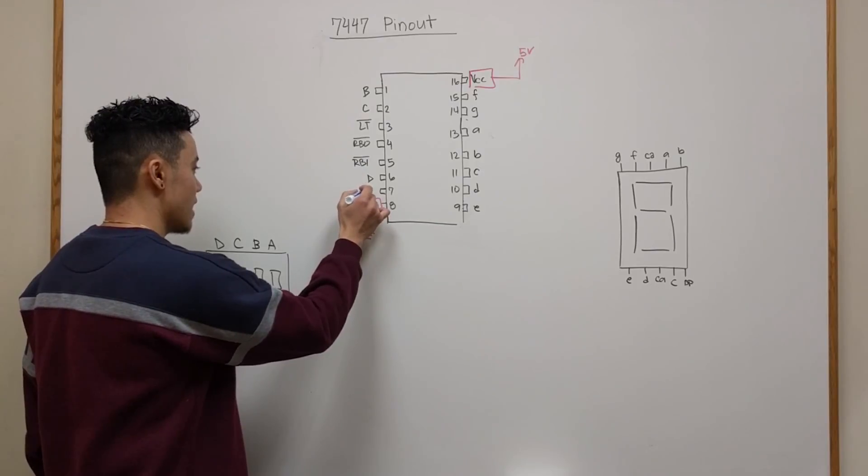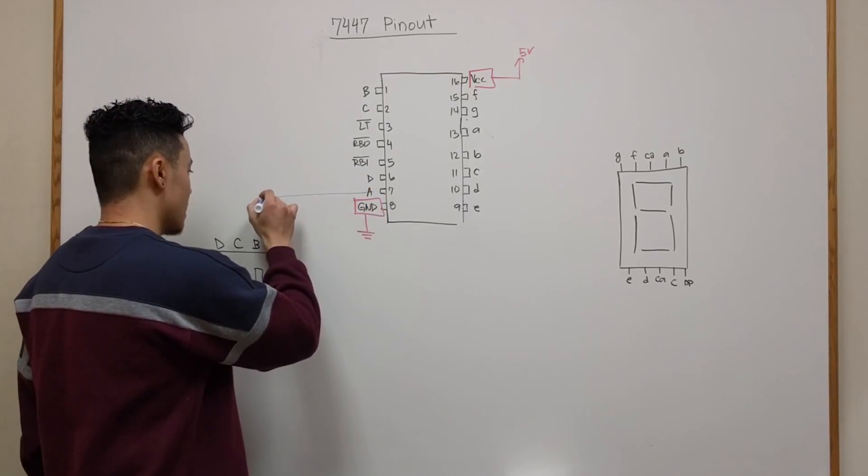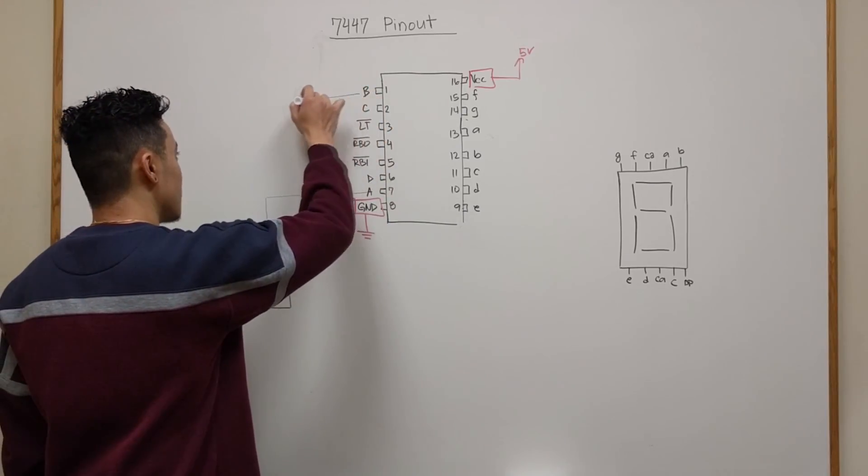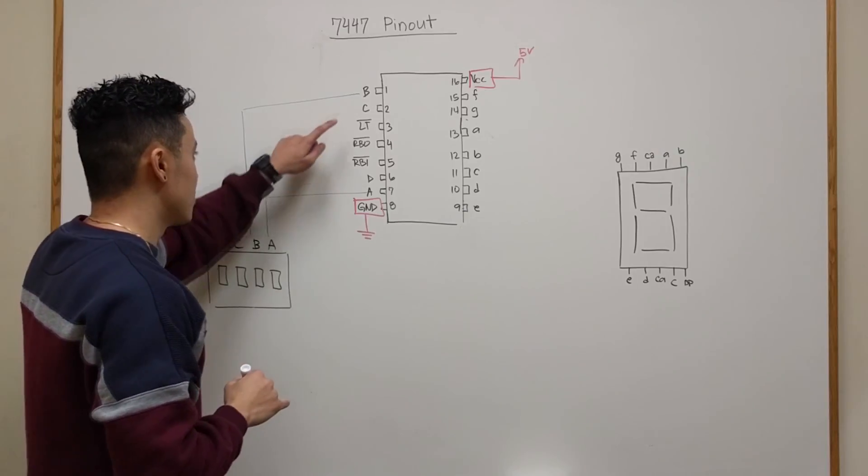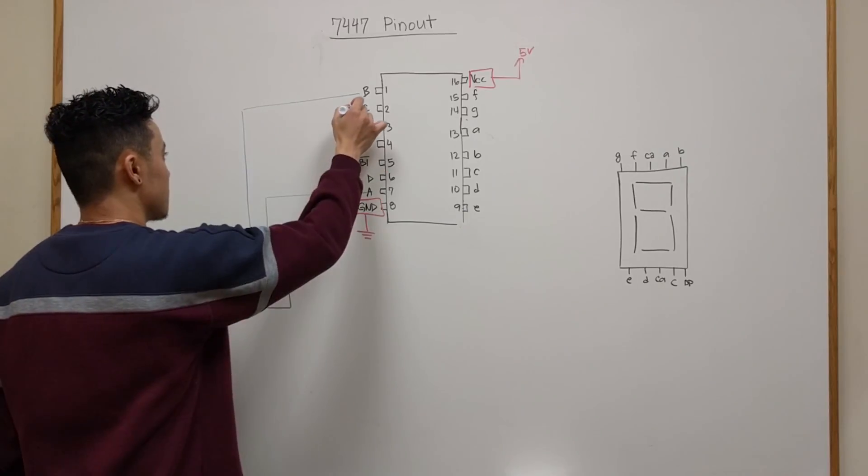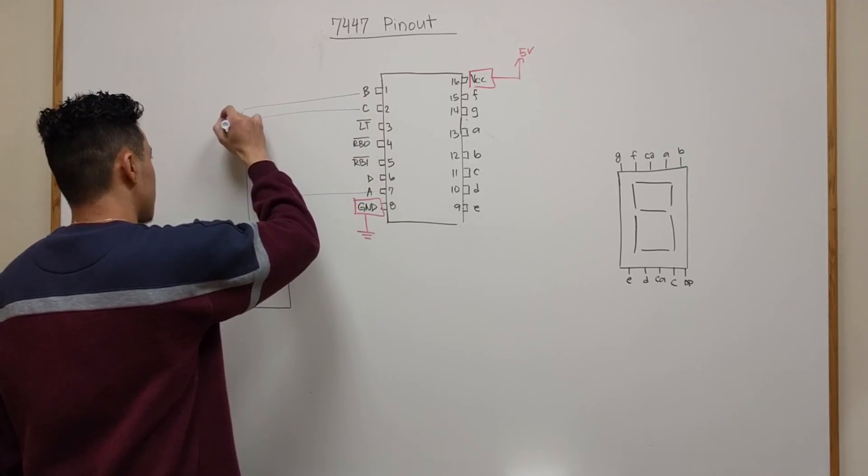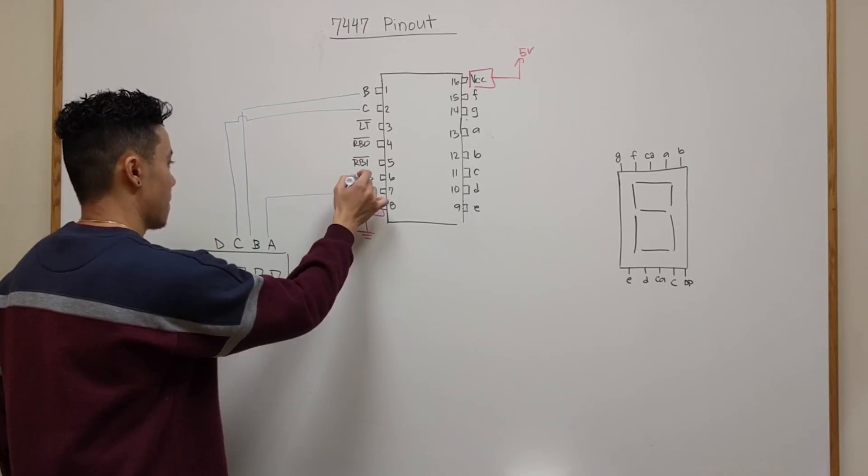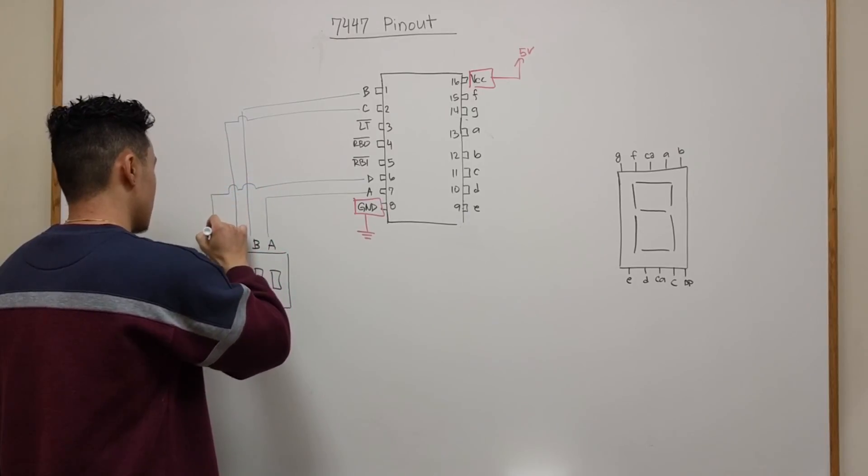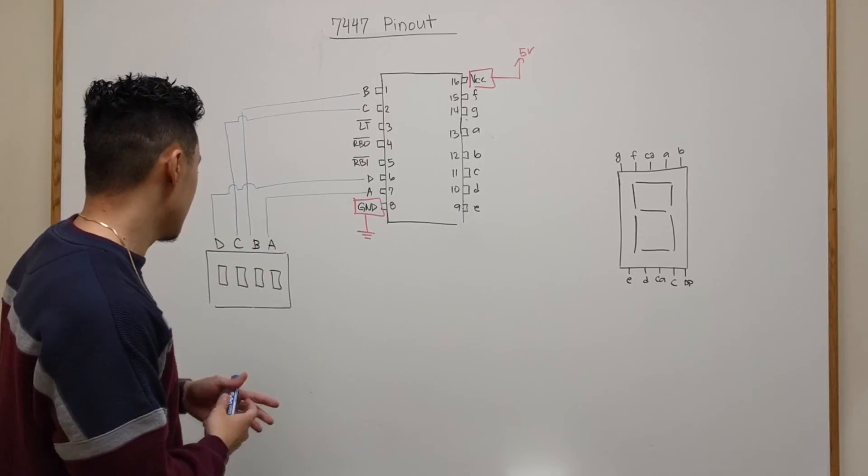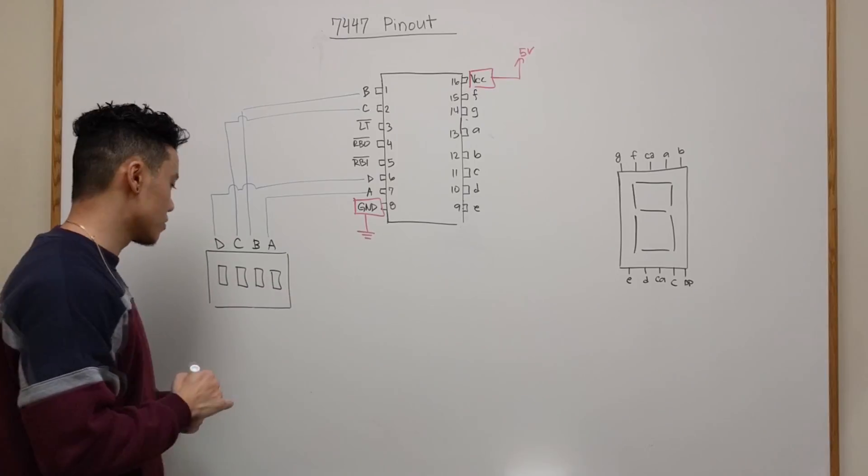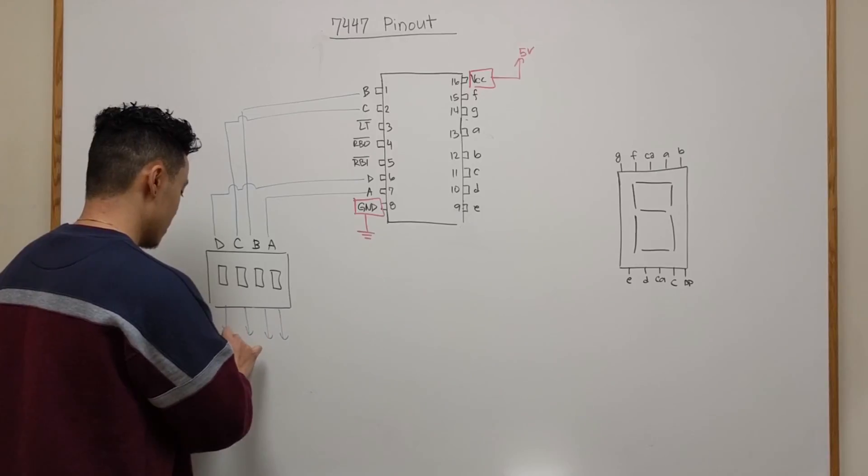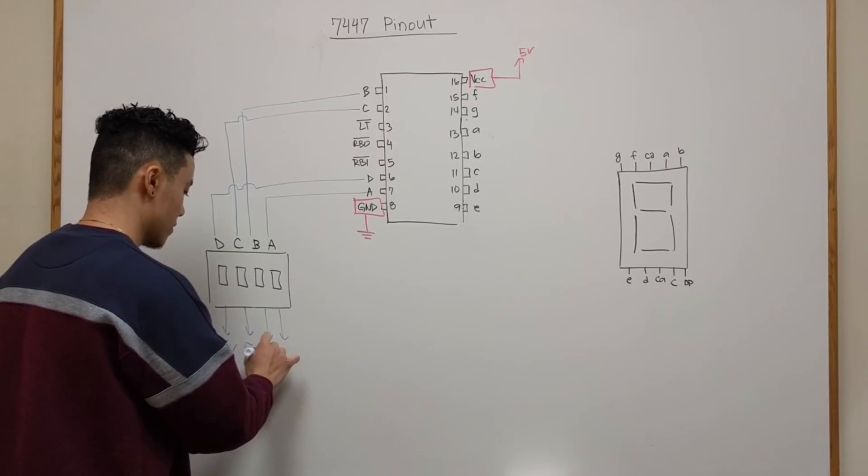A just goes directly to A so we'll connect pin 7 to A. B goes to B so that's pin 1 to B, and then pin C to C, and finally pin D to D. We're going to also connect the switches to power as well. So all of these switches will be connected to your 5 volt power supply.